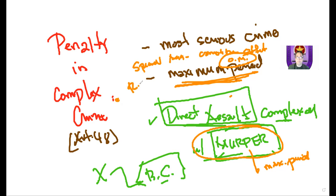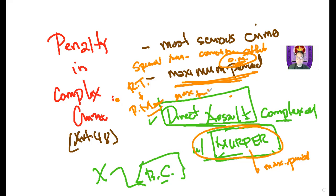However, if there is a privileged mitigating circumstance — for example, the offender is 17 years of age acting with discernment — you lower the penalty by one degree. From reclusion temporal, lower it to prisión mayor. But impose that in its maximum period, without regard to the presence of any ordinary mitigating circumstances.